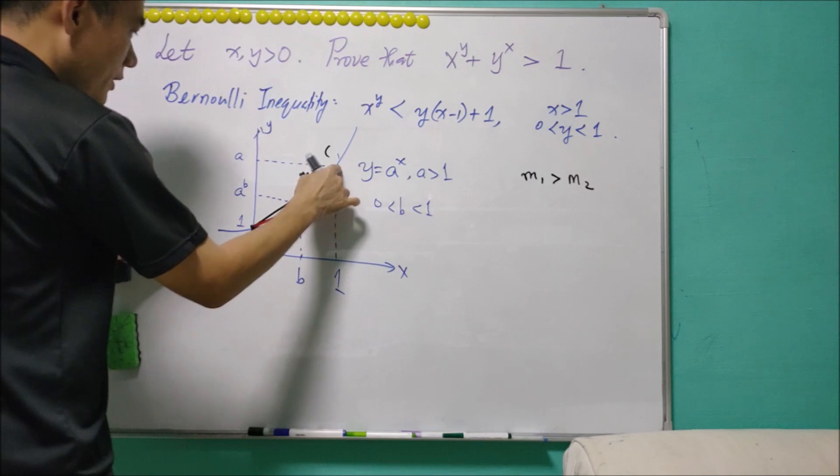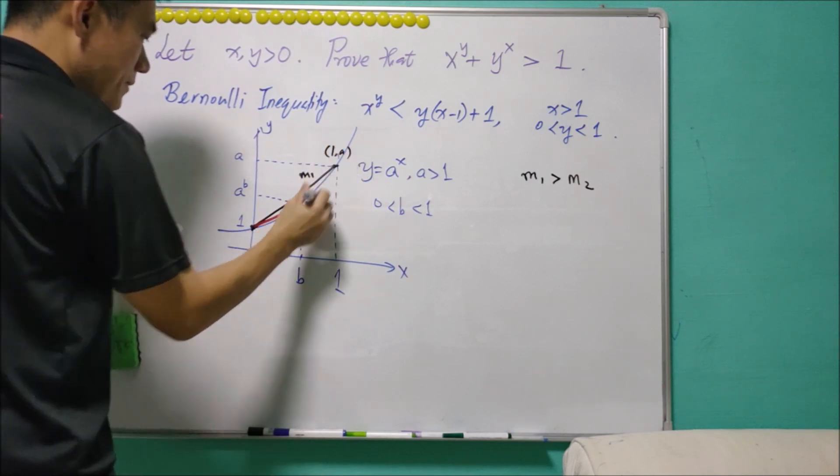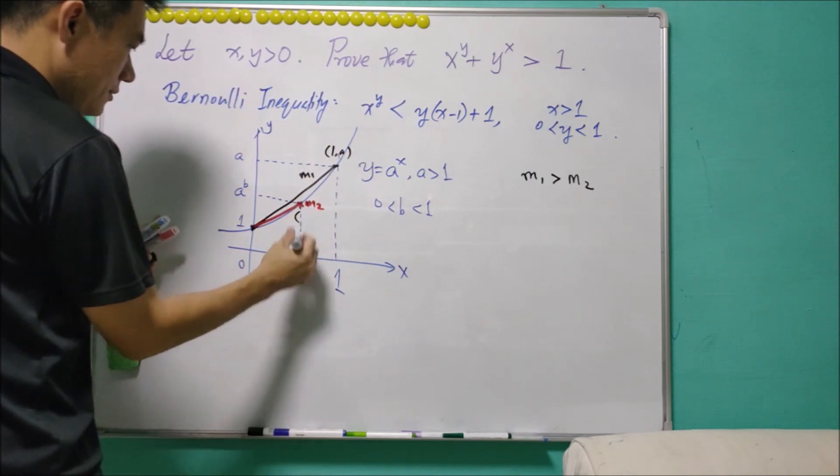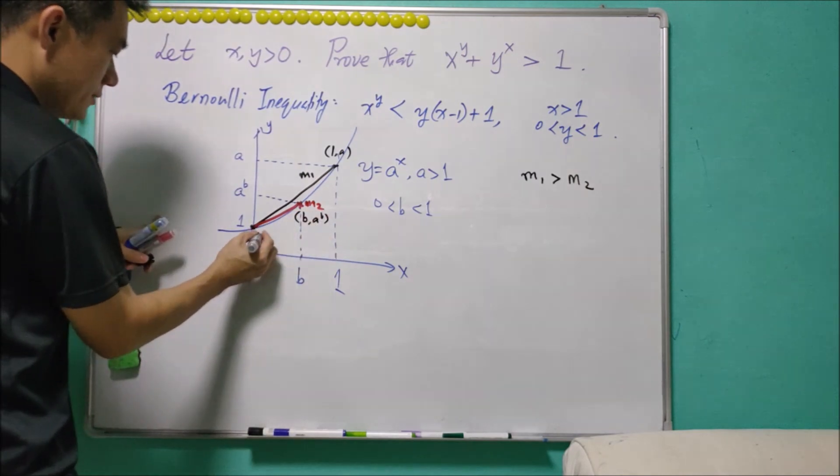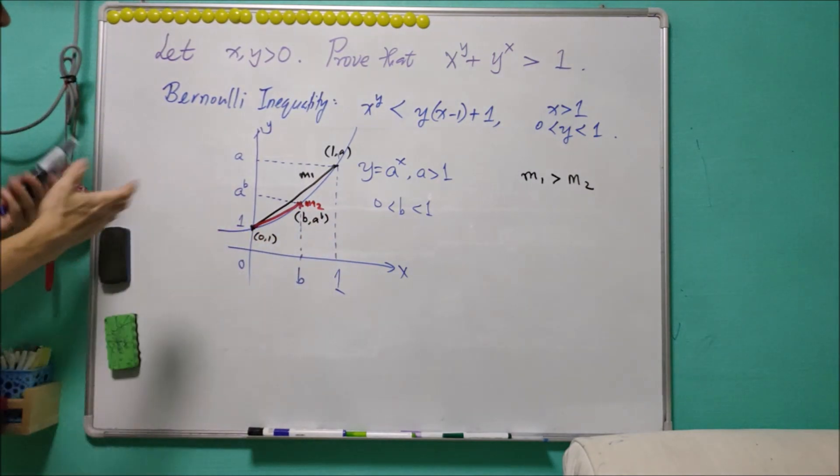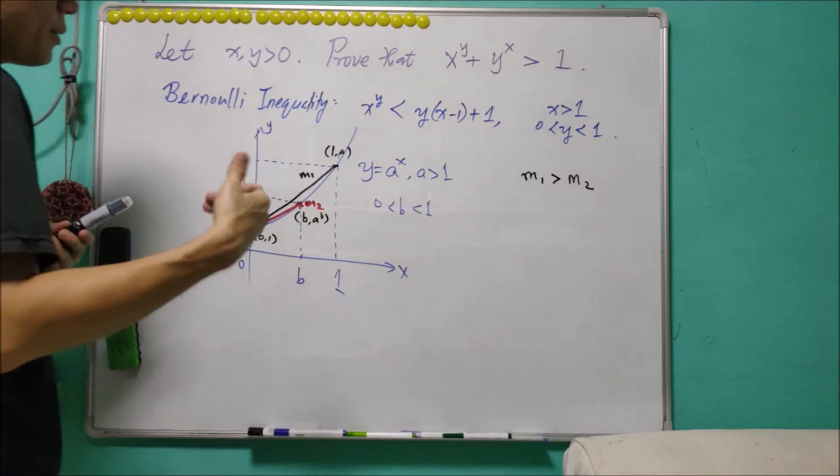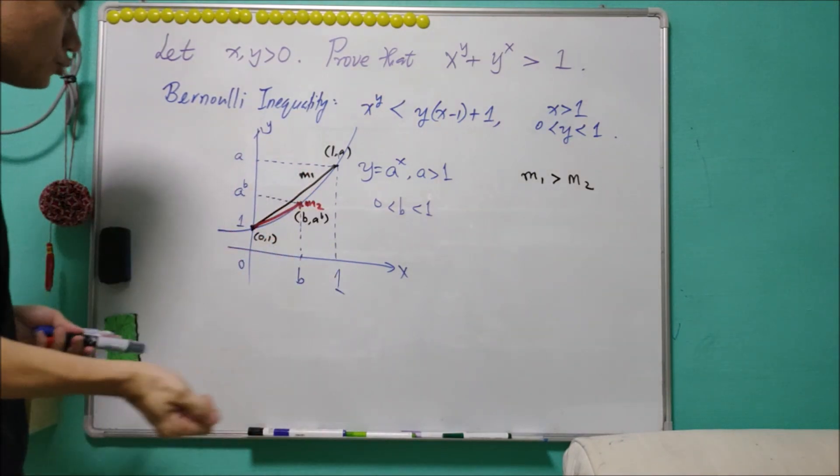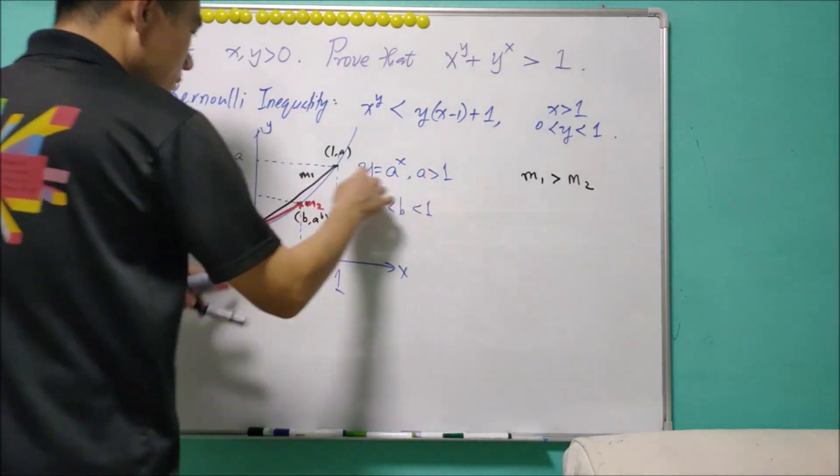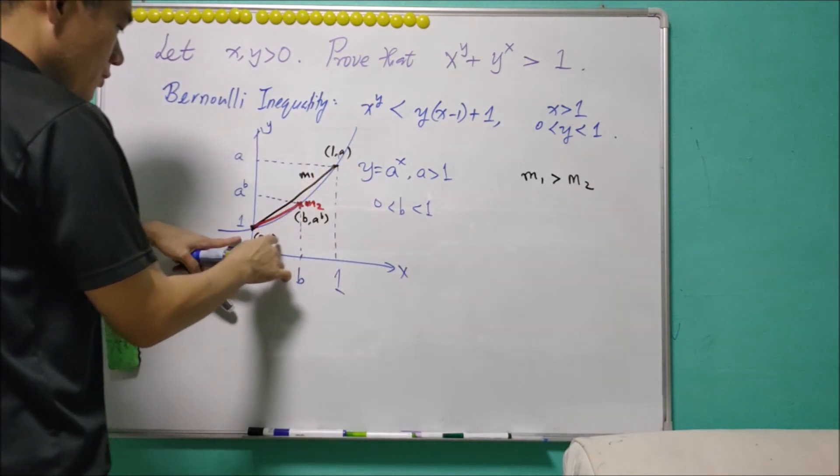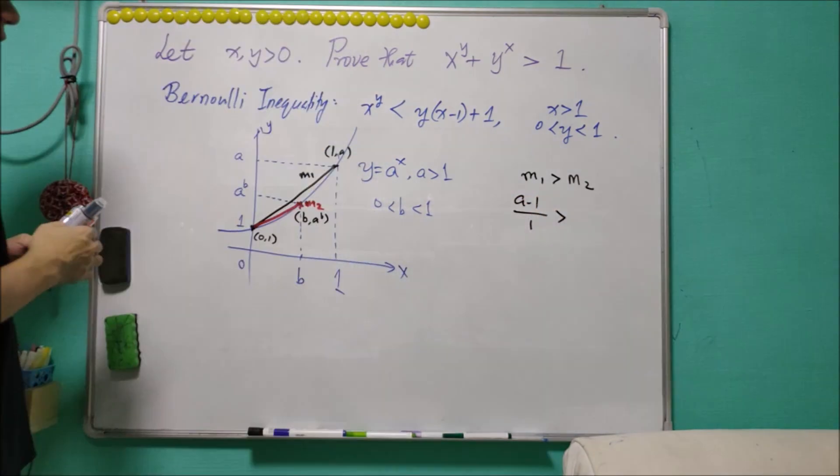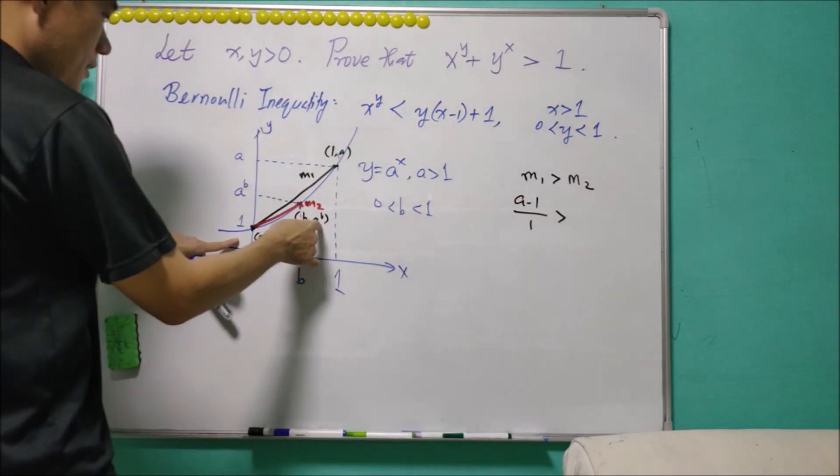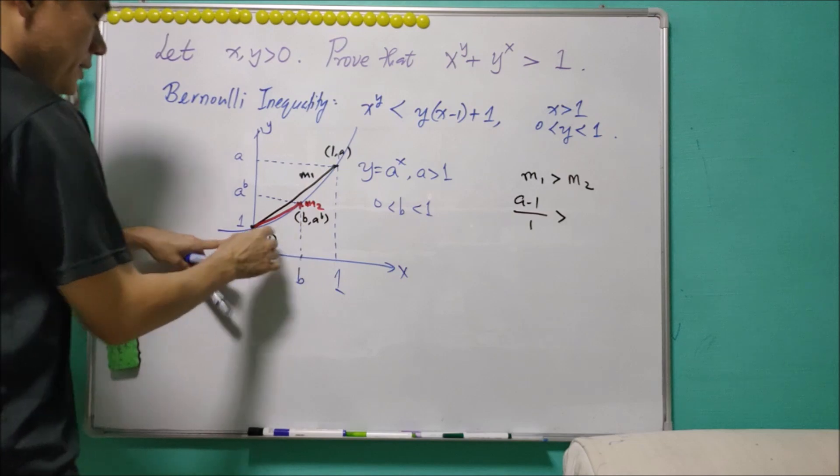This particular point is (1, a). This point is (b, a to power b). And this point is (0, 1). So the gradient is defined by y1 minus y2 over x1 minus x2. So m1 will be a minus 1 over 1, and m2 will be a to power b minus 1 over b.